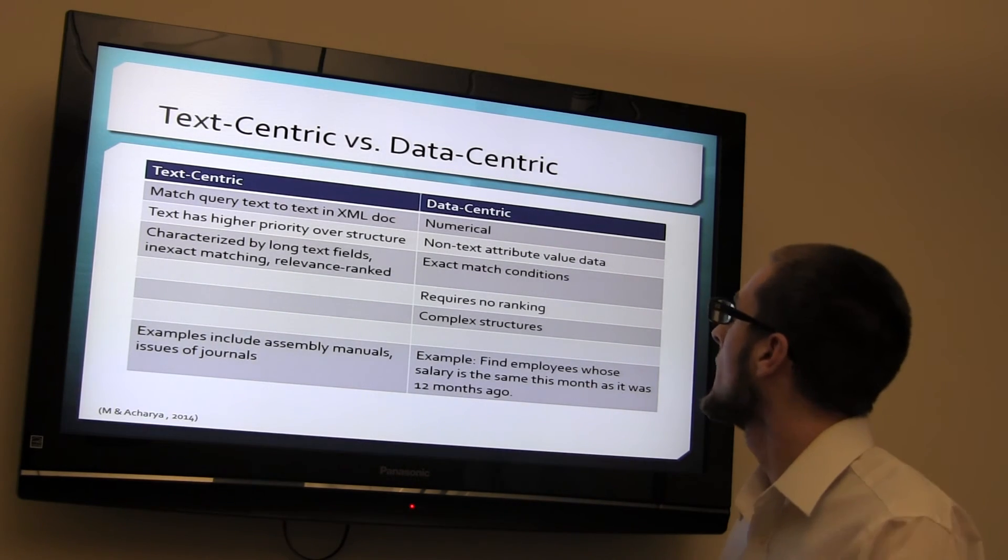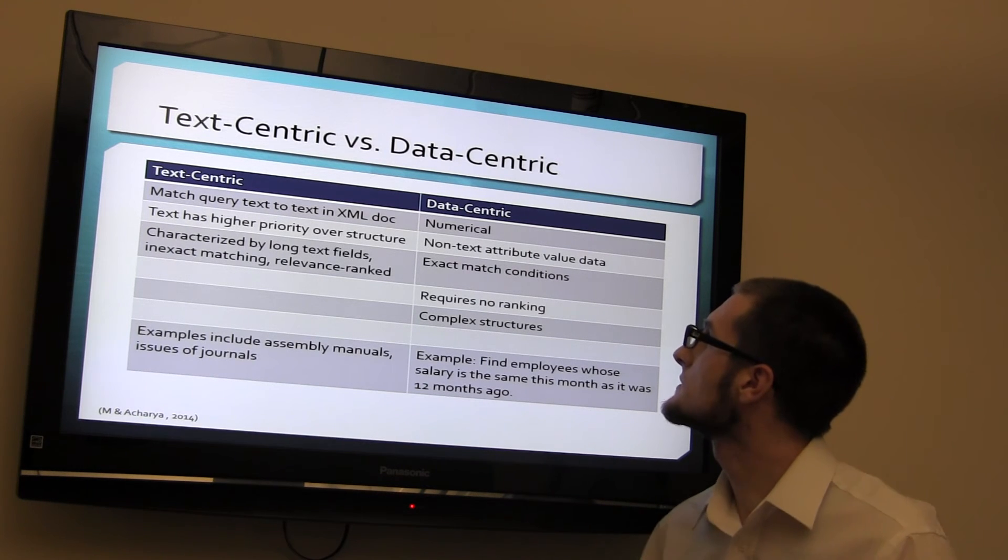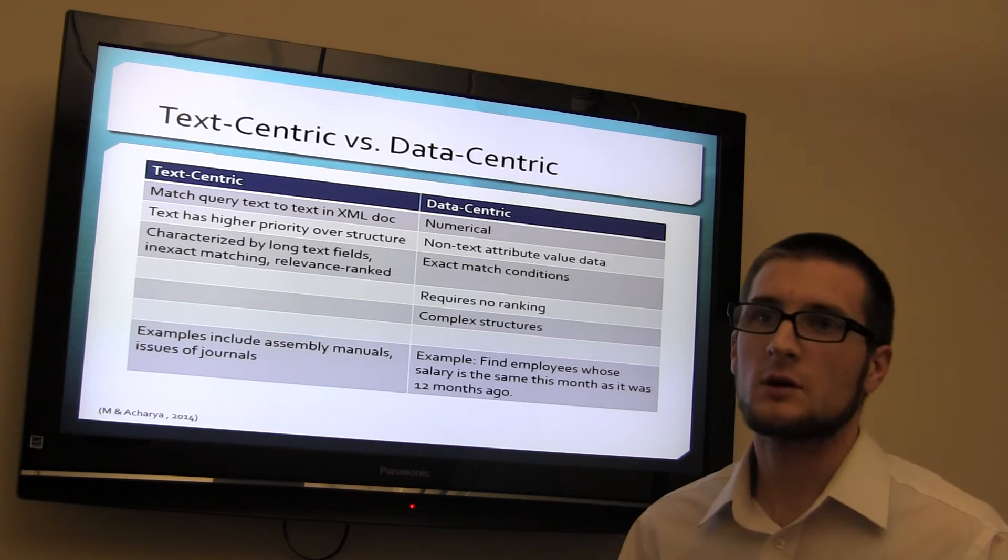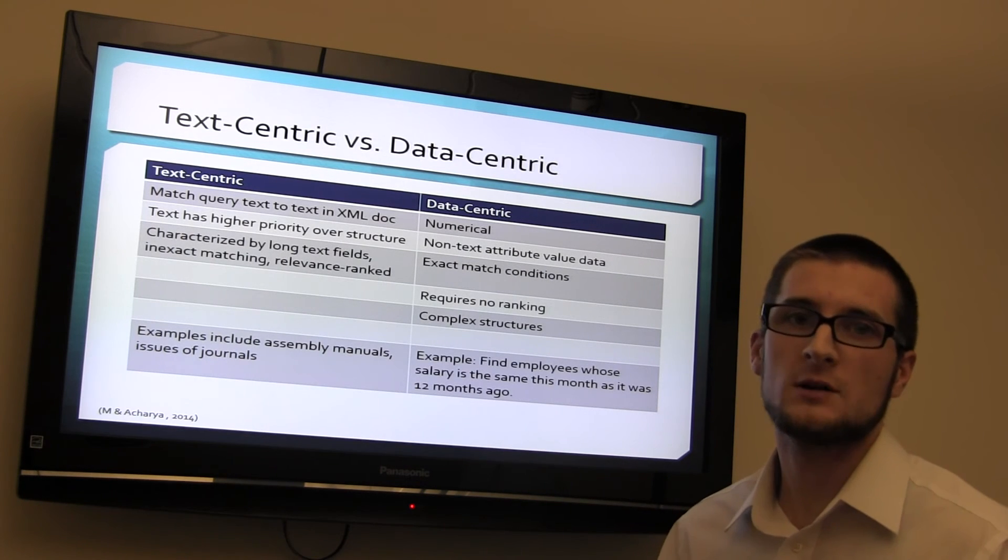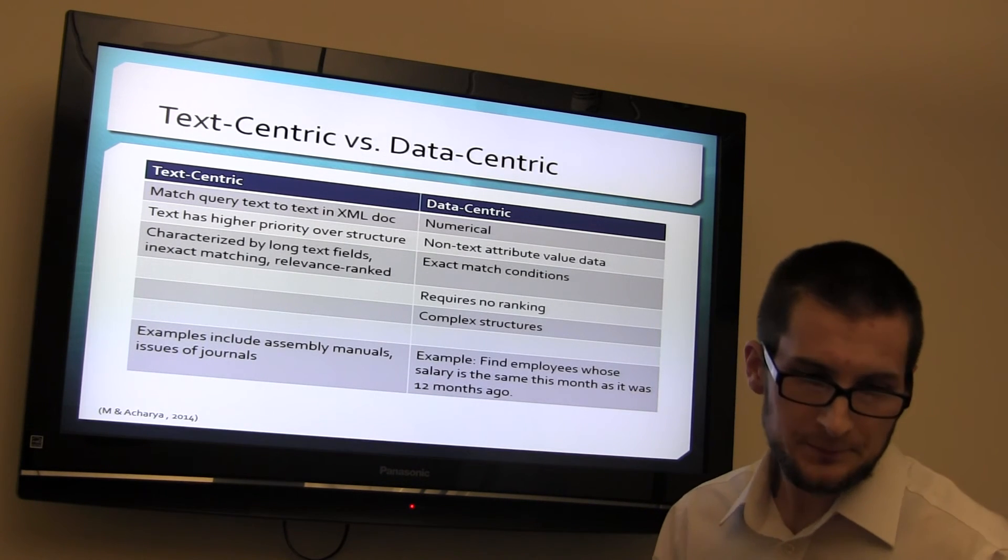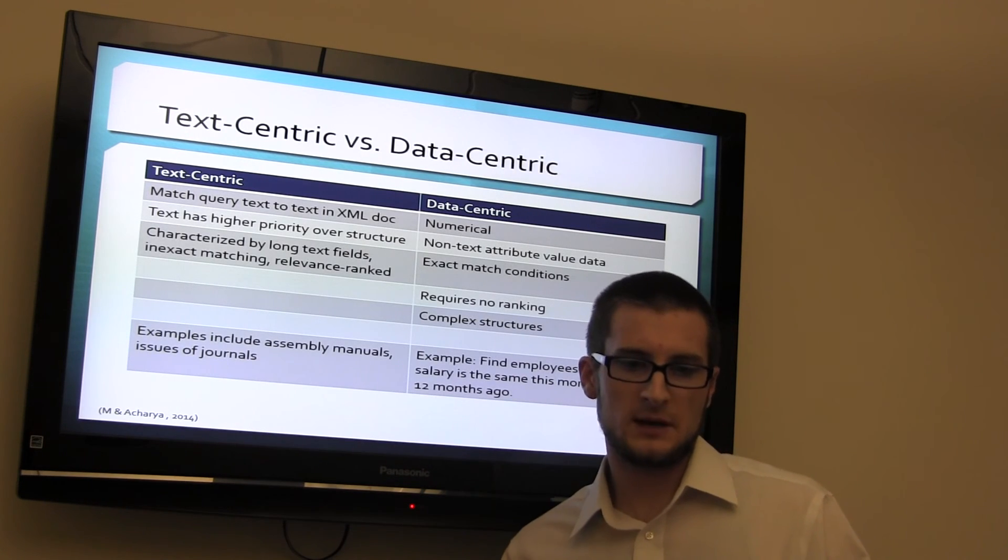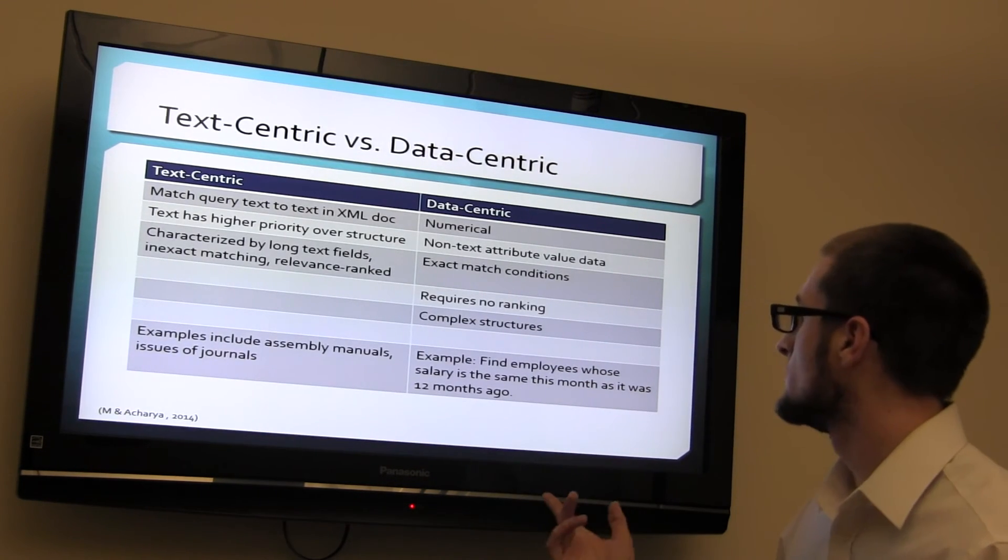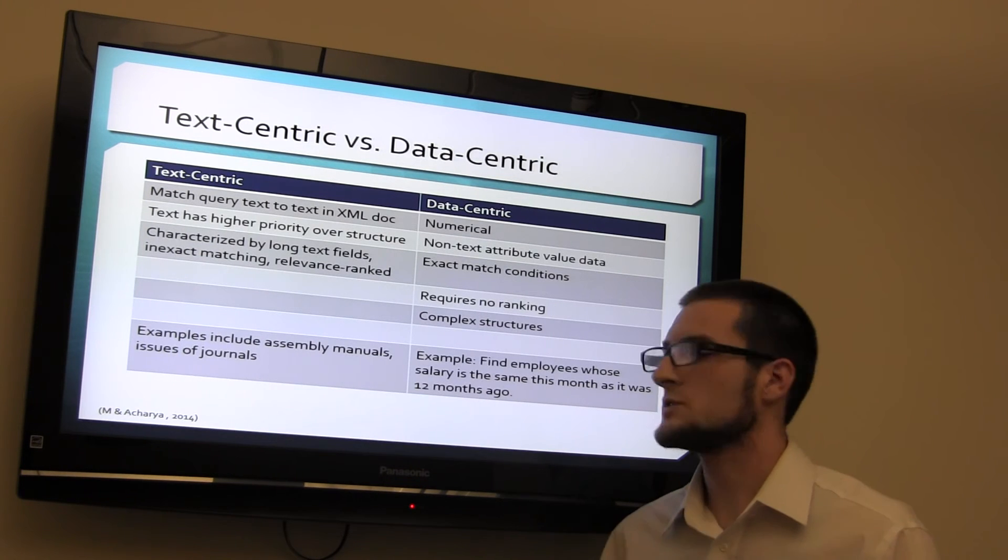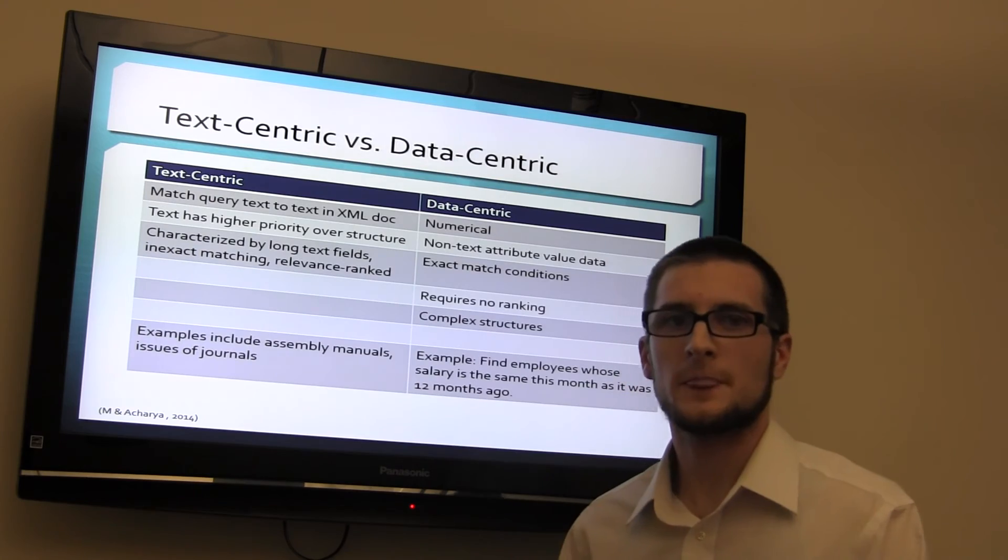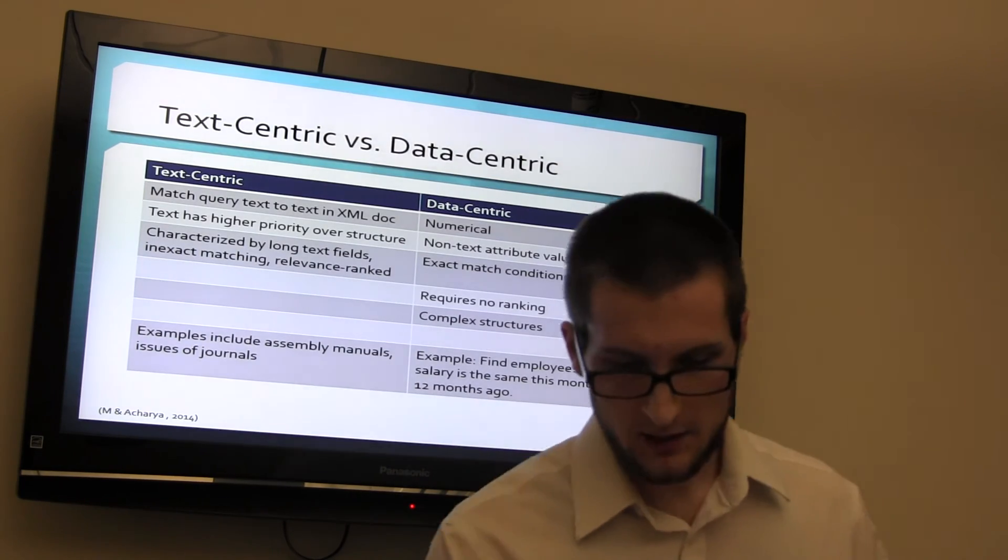Whereas data-centric is numerical, non-text attribute, value data, exact match conditions. So it has to exactly match what it is if you're looking for John Doe. You have to find John Doe. Requires no ranking. It's complex structure. An example would be, find employees whose salary is the same this month as it was 12 months ago. Now, the only way you're going to find that is with index data and data that's in a database.